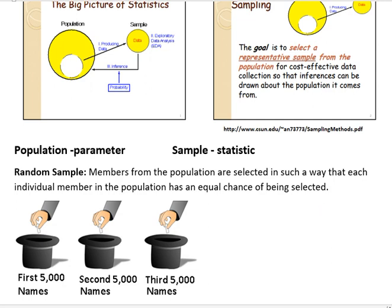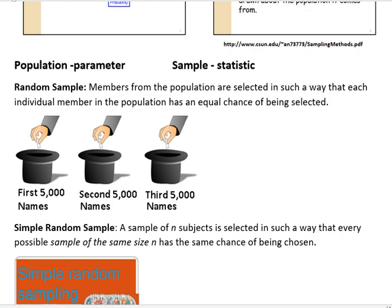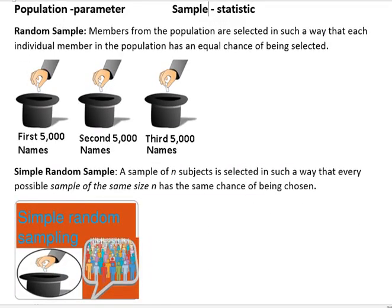But another type of sample that gets confused with that is a simple random sample. And in a simple random sample, everybody has to have the equal number of chance of being drawn, but also it has to be selected in a way that every possible sample of the same size N has the same chance of being chosen.